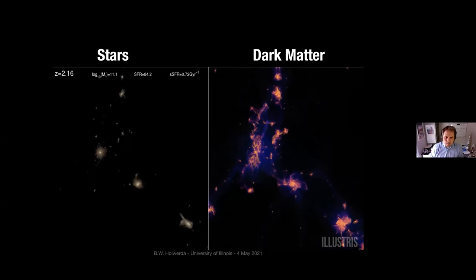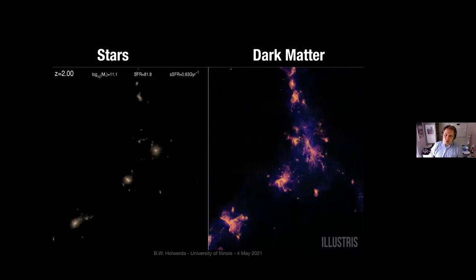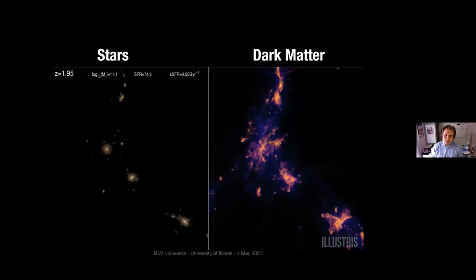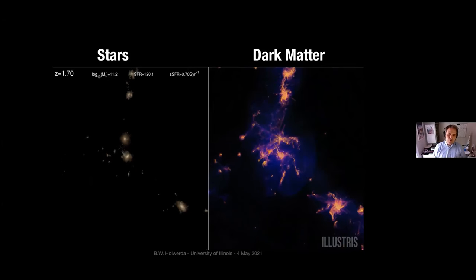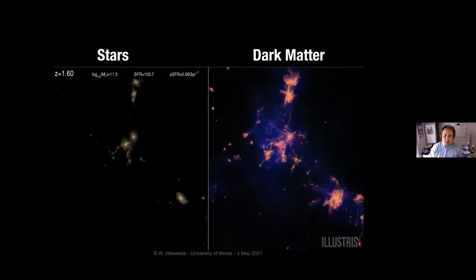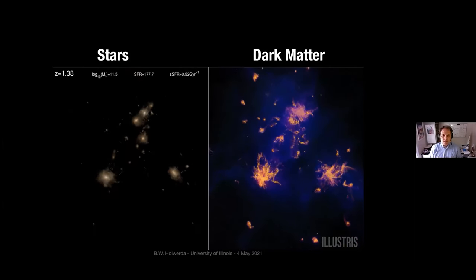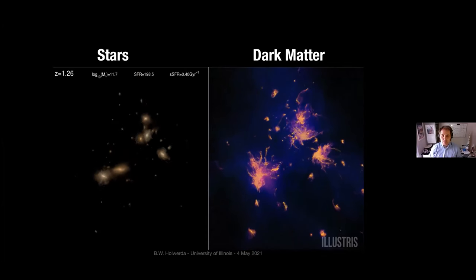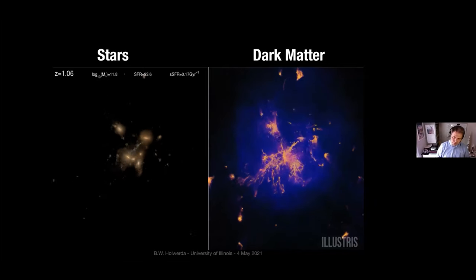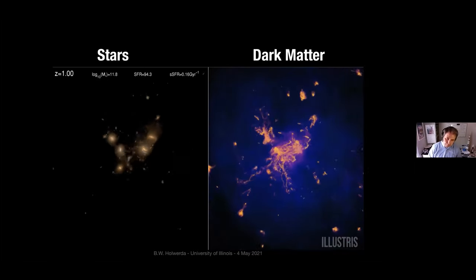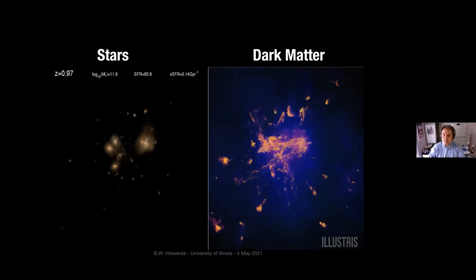In dark matter simulations, you see the bigger halos merge and the galaxies within them merge. If you're looking at something an order of magnitude bigger than our Milky Way, you expect lots of remnants from everything it's swallowed over the years — all the galaxies and gas it acquired. You should also notice that the big halos are connected by filaments, along which gas funnels to these galaxies. Even the fact that they're merging doesn't mean they can't still be a spiral or star-forming galaxy — you can survive a merger and still be a disk galaxy.